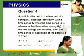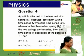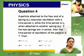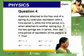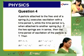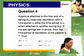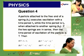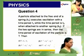A particle attached to the free end of a spring of constant K1 executes oscillation with time period T1, while the time period is T2 when it is attached to a spring of constant K2. If the two springs are joined in series, what is the time period of oscillation?